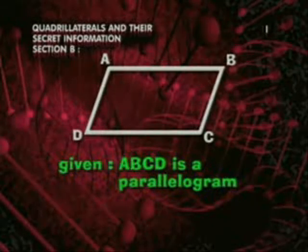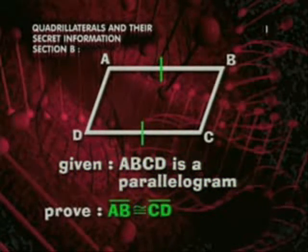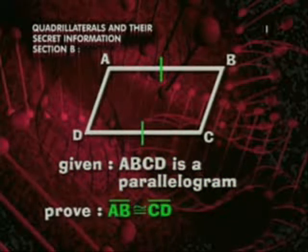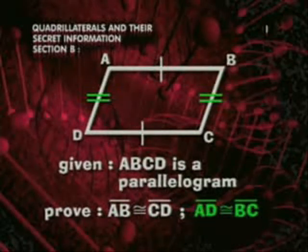Given that ABCD is a parallelogram, prove that segments AB and CD are congruent, and segments AD and BC are congruent.